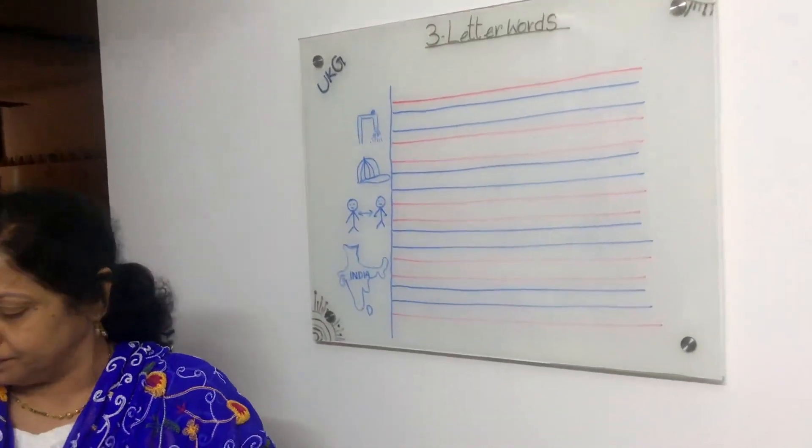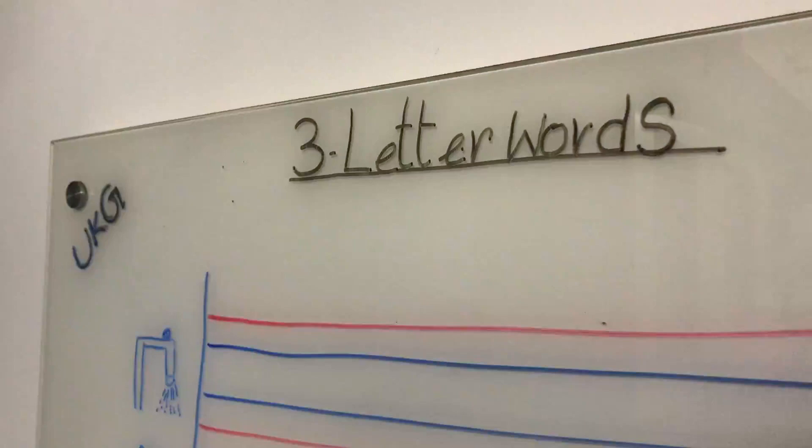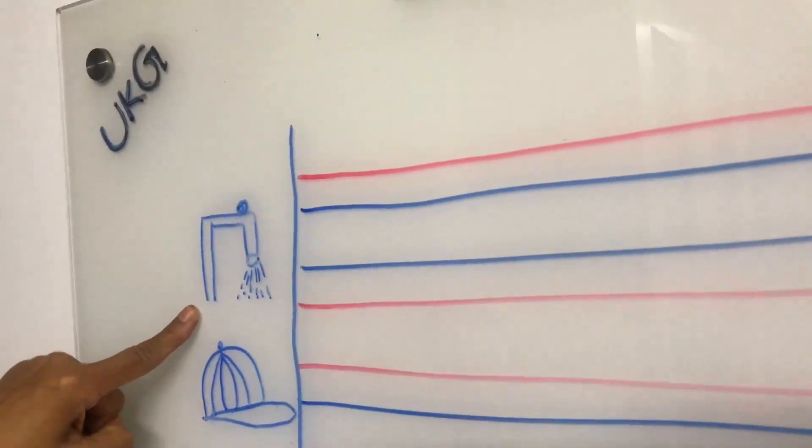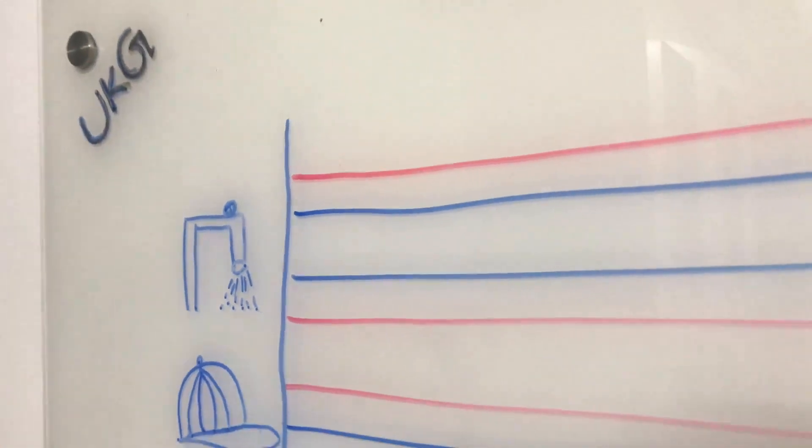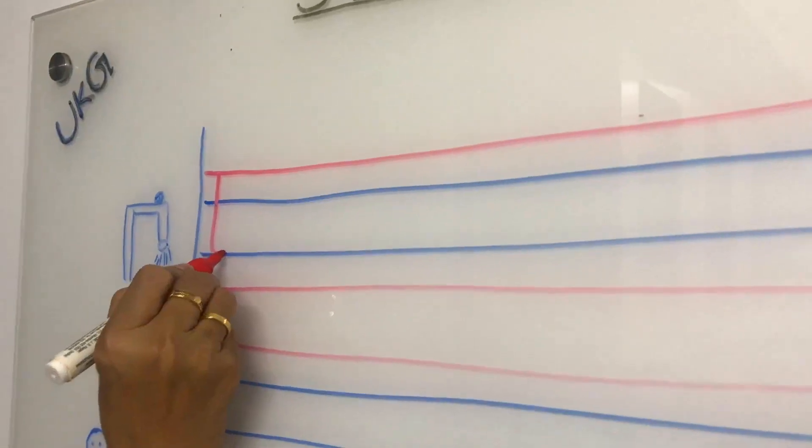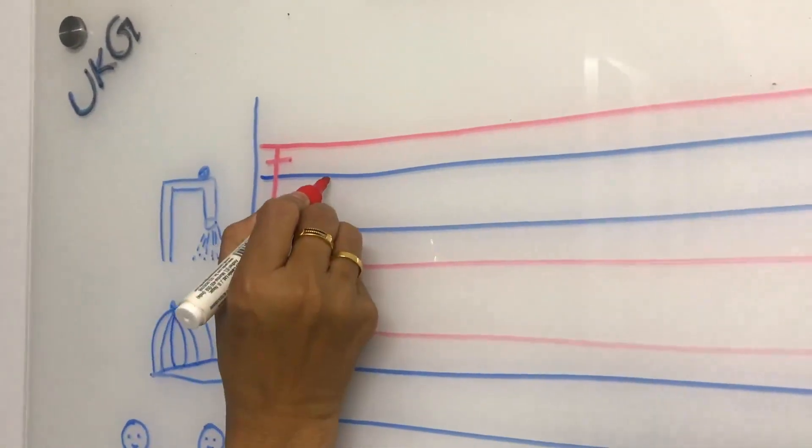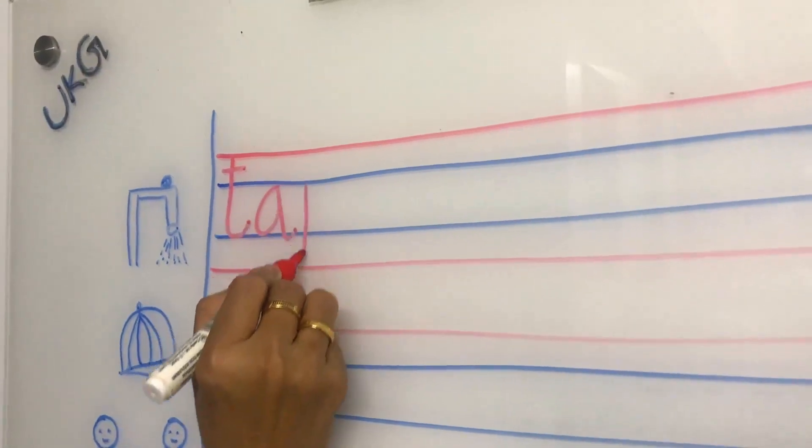Look here. See here. What is that first one? What is this? This is tap. What is the spelling of tap? See, look here. T, A, P, tap.